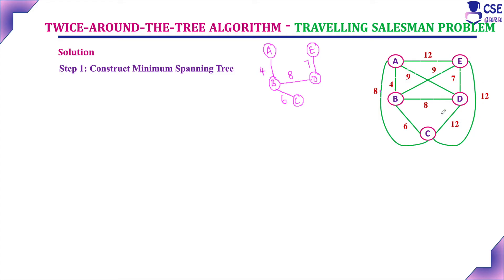For edges of cost 12, including any of those would form a cycle, so they are not included. We have now obtained the minimum spanning tree. The minimum spanning tree includes all vertices from the given graph, with edges selected in increasing cost order: 4, 6, 7, 8. Any edge that would form a cycle is excluded. All vertices are connected and no cycle is formed — this is the minimum spanning tree for the given graph.